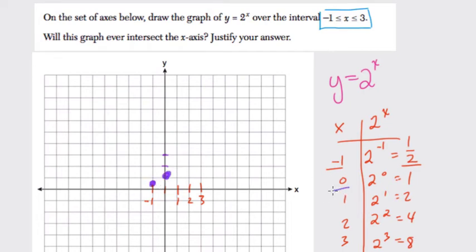When x is 0, y is 1. When x is 1, y is 2. When x is 2, y is 4. When x is 3, it's 8. So count there: 1, 2, 3, 4, 5, 6, 7, 8. So right here.